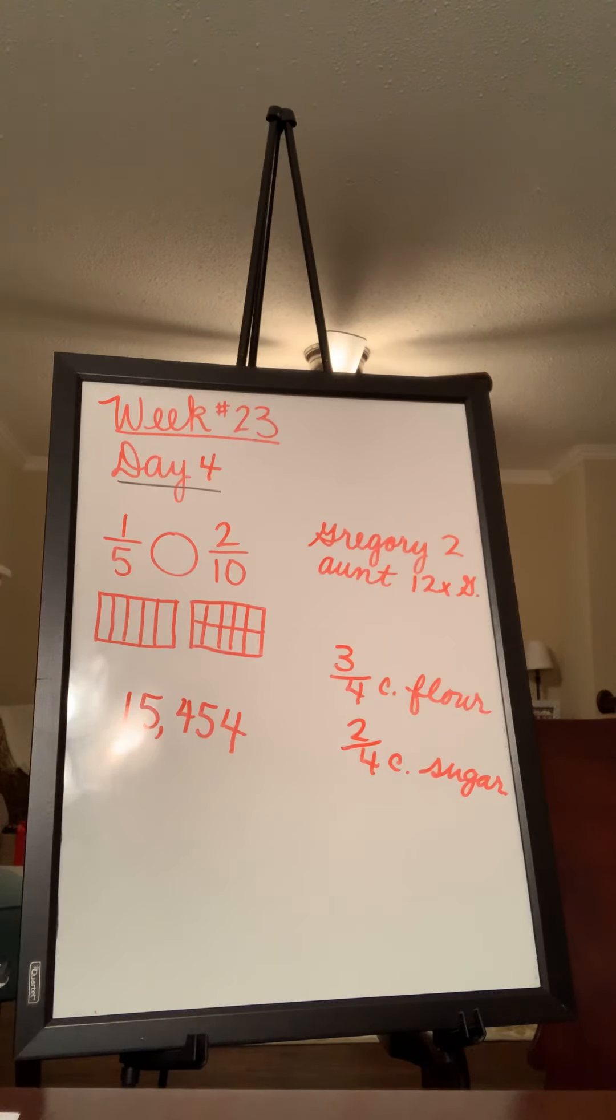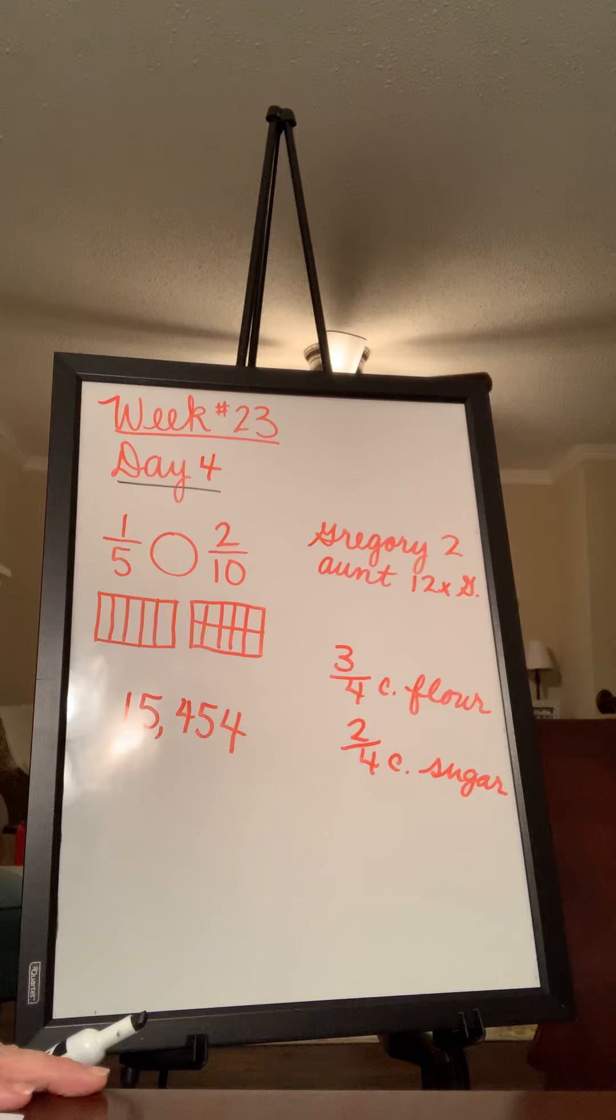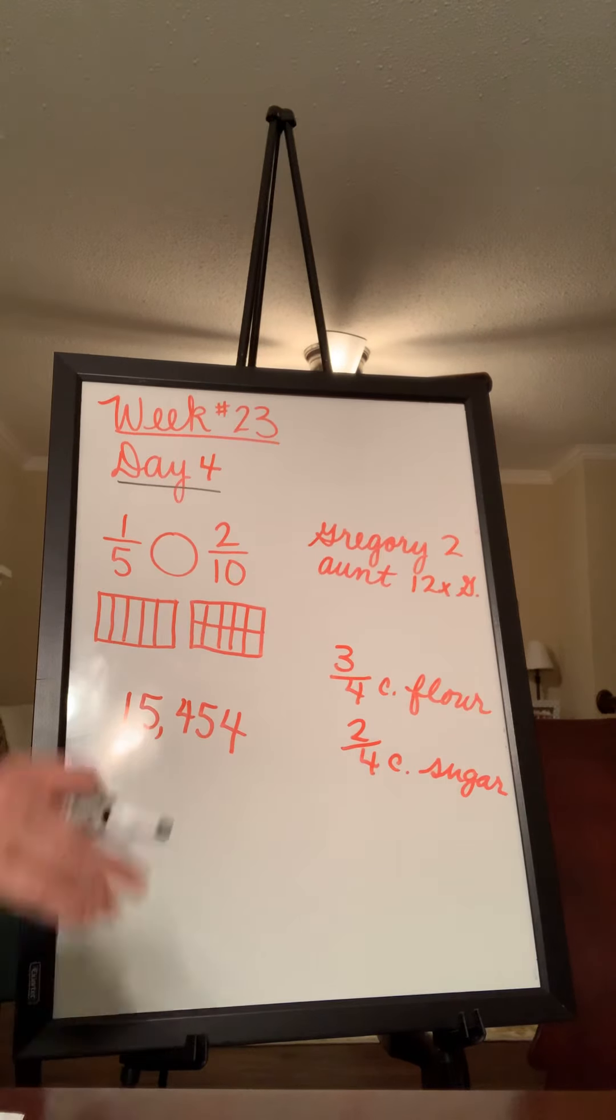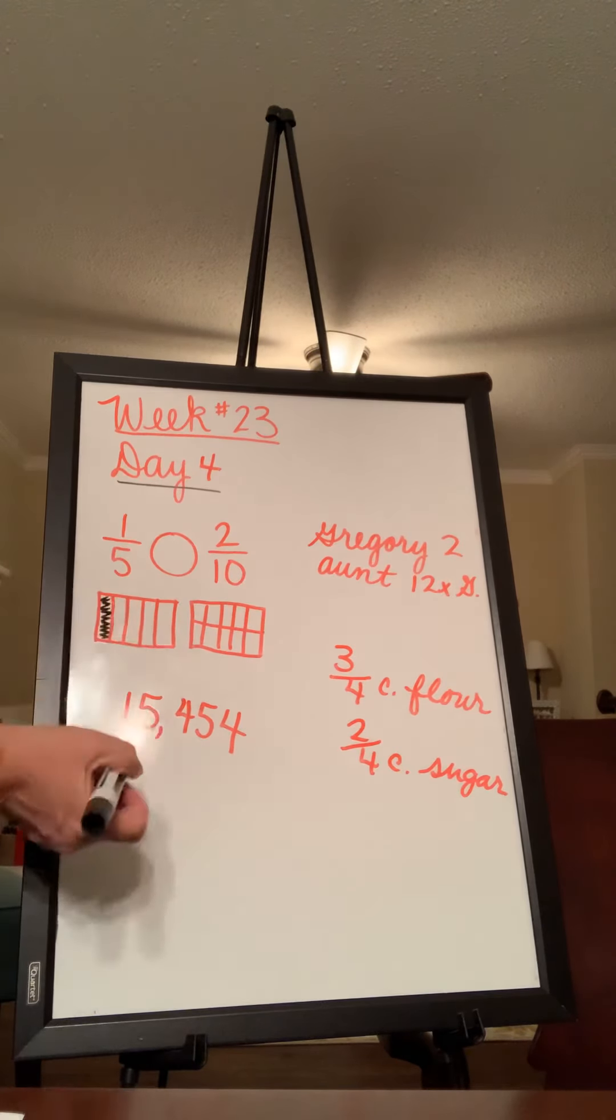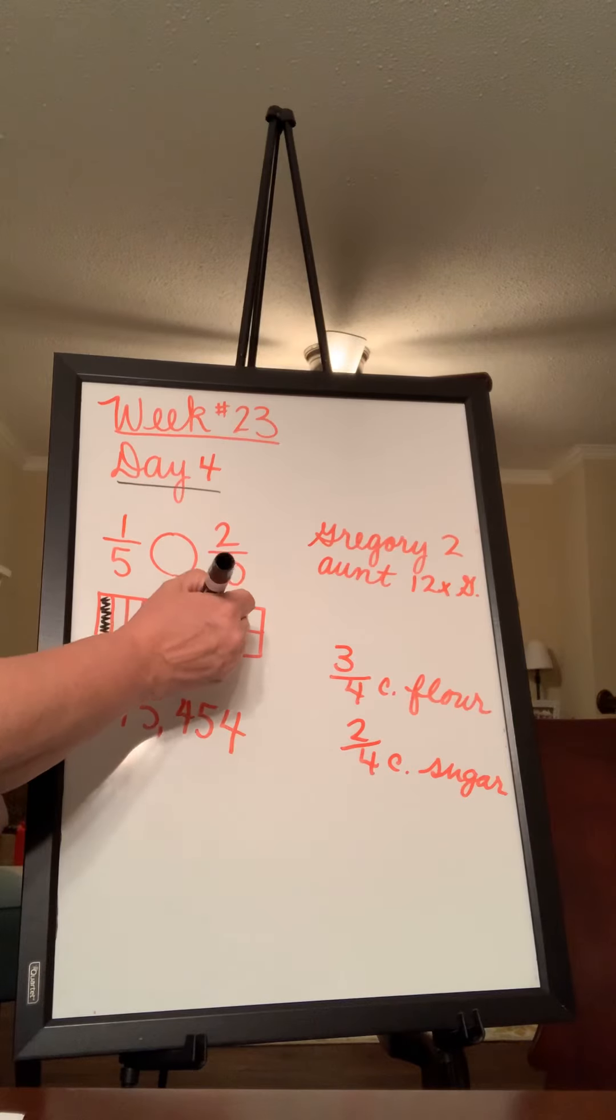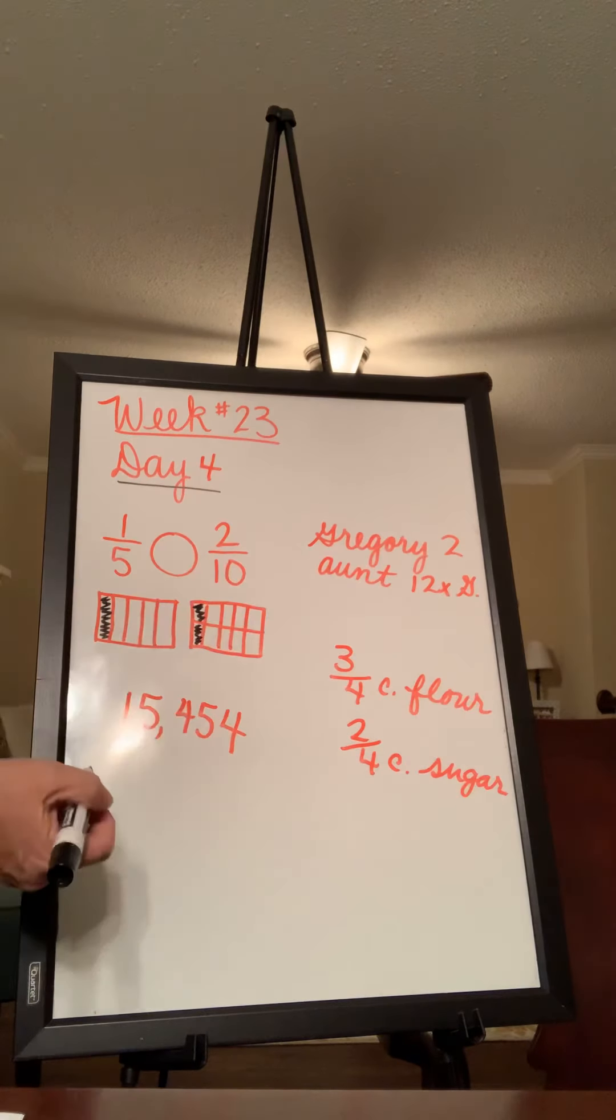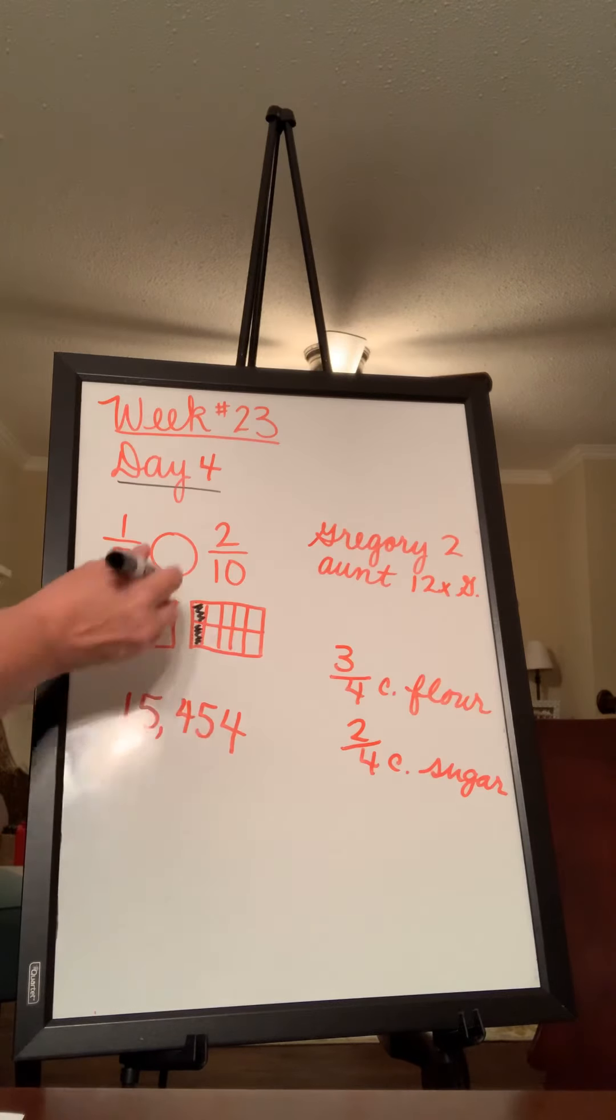So in our first box we have one-fifth compared with two-tenths. It says to write greater than, less than, or equal to make the statement true. So I drew a picture to help us be able to see this a little better. If we have one-fifth or two-tenths, look at that, they are the same.